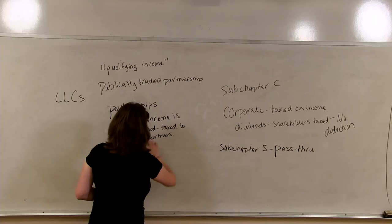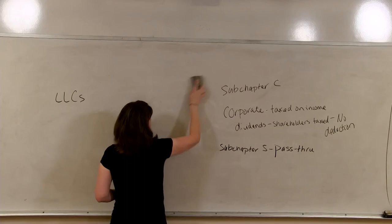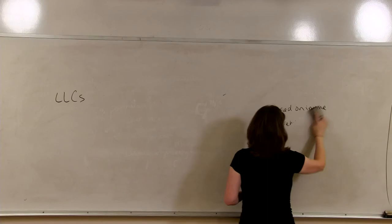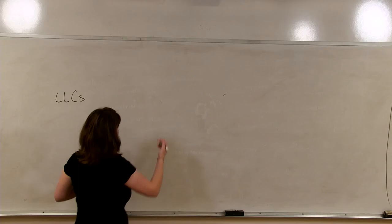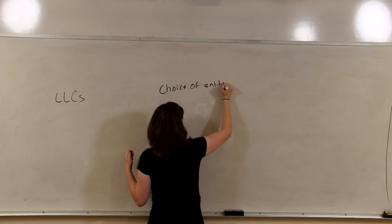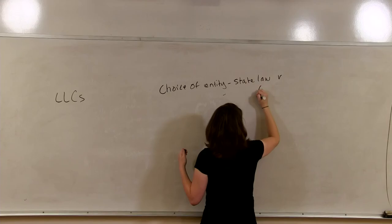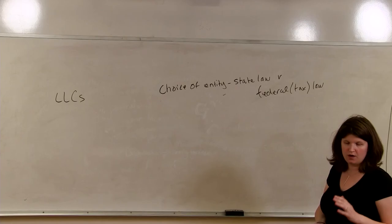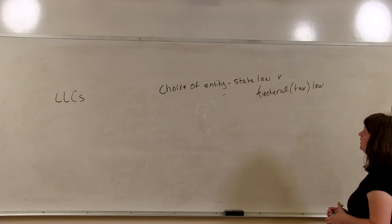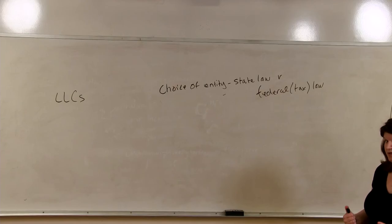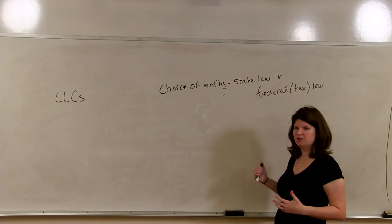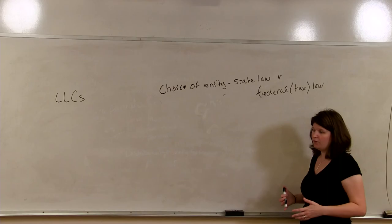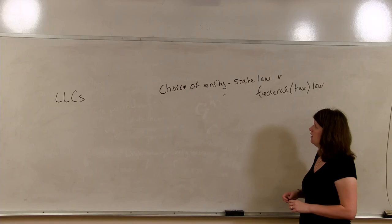Which leads me to my next point. Something I want to discuss that is not really discussed that much in the book. But I think it's something that definitely needs to be discussed. It's something I've lectured on a couple times to attorneys. And that is the difference of choice of entity with state law versus federal law. Federal being tax law. And we are only talking about federal income taxes in this class. We are not talking about state income taxes.